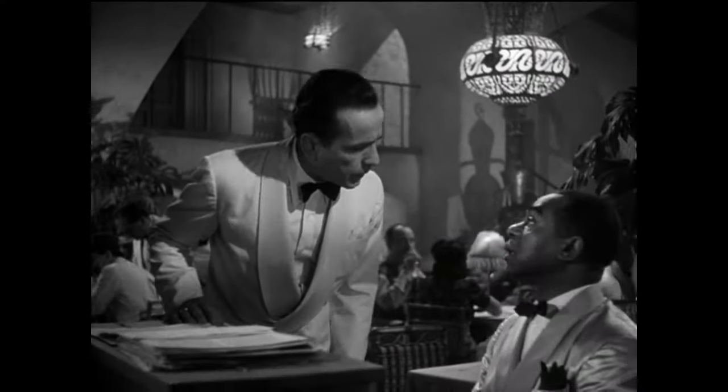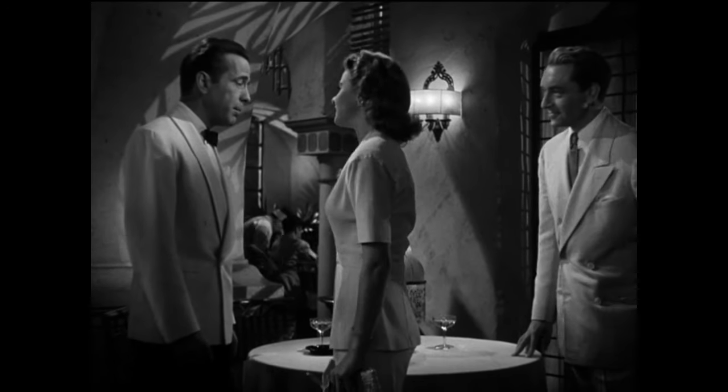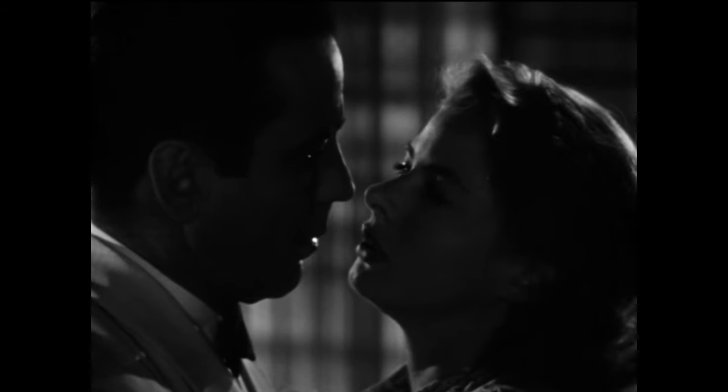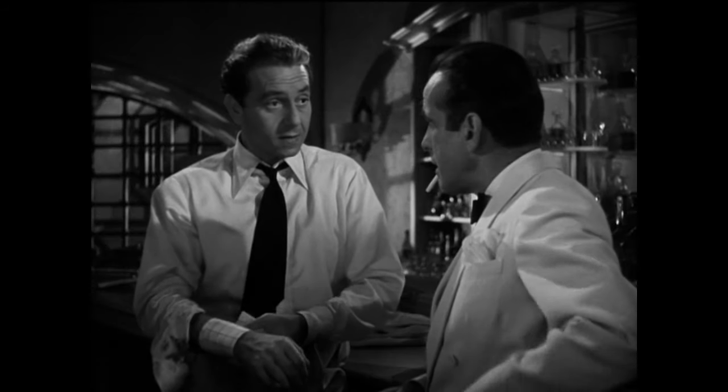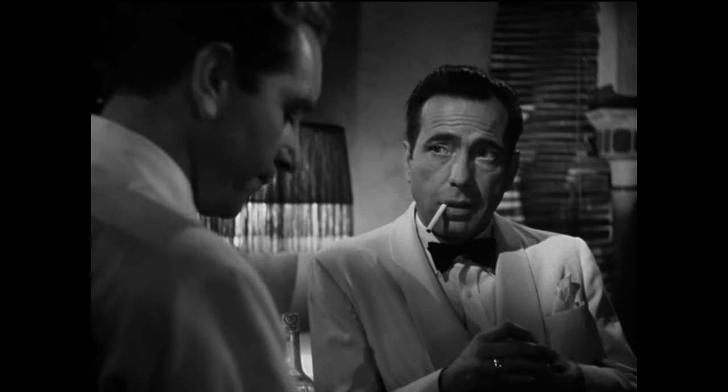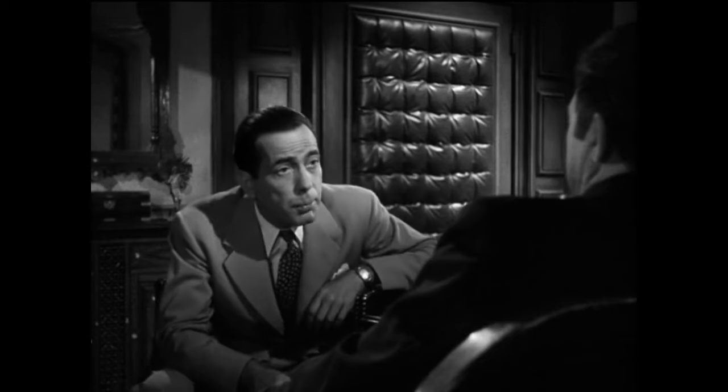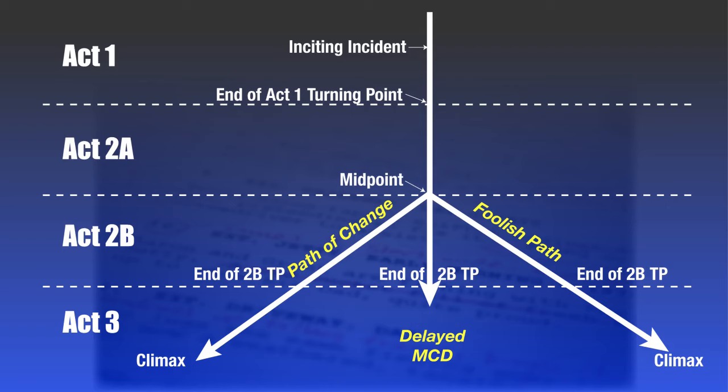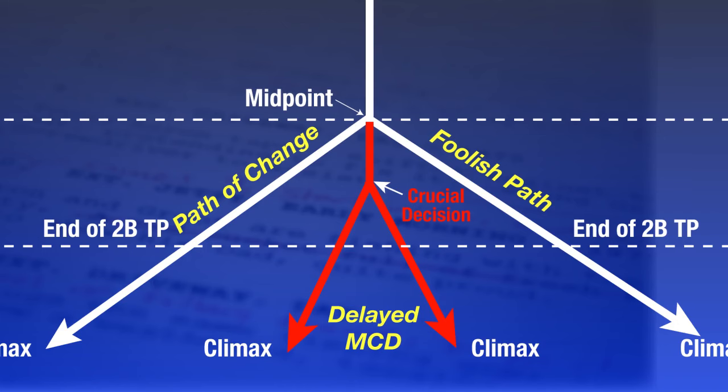Imagine if in Casablanca, Rick decided to give up his ego and help Ilsa and Lazlo halfway through the story — the second half would have been an entirely different movie, and the whole Act 2 love triangle would have been lost. So instead, the writers realized it was better to keep Rick on the fence for as long as possible, drawing out the question of what road he'll ultimately choose. Out of the need for flexibility, we have a third structural option: that of a delayed crucial decision, which will itself dovetail at some later point. So now I'm going to walk you down each one of these paths, which are similar in some ways but also different in ways that really affect the action of Act 2B and into Act 3.